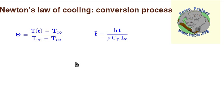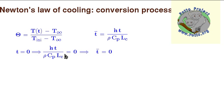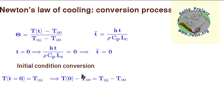We define a dimensionless temperature as the instantaneous temperature difference divided by the initial difference, as suggested by the derivation. The dimensionless time will be h times t divided by rho times C_P times L, which represents the typical timescale for temperature change. If t equals zero we can show that the dimensionless time is also equal to zero, because t equals zero multiplied by some constant also yields zero.